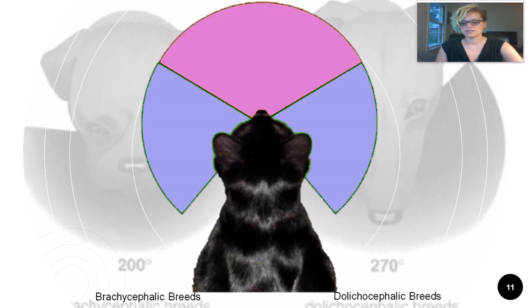Most animals have evolved their eyes on the sides of their head — like guinea pigs, rabbits, most reptiles, many fish, many birds, etc. A wider field of vision and a better sense of smell seem to be preferable to visual clarity in many species.